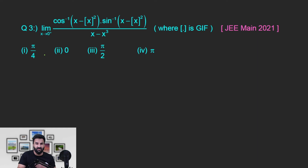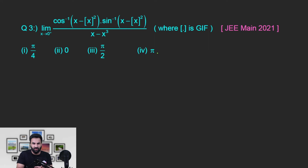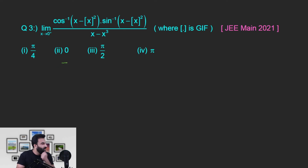यहाँ पर हमसे सिर्फ right hand limit के बारे में बात की गई है। x tending to 0 plus — 0 plus मतलब 0 से थोड़ा सा ज्यादा — 0 से थोड़े से ज्यादा के लिए greatest integer की value क्या होगी? 0. तो यह बन गया 0, यह भी बन गया 0। तो यह जो greatest integer है, इस particular question में वो सिर्फ डराने के लिए था — अगर आप डर गए तो examiner का motive fulfill हो गया, और अगर आप नहीं डरे तो उसका पोपाड हो गया।